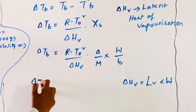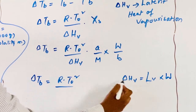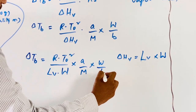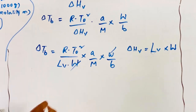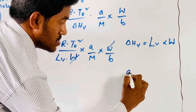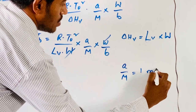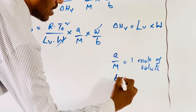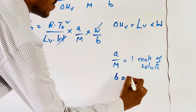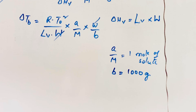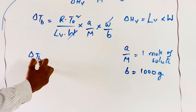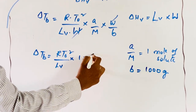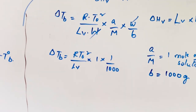Substituting the above values, delta Tb equals R T0 squared divided by (Lv into W) into (A by M) into (W by B). W and W cancel each other. A by M equals 1 mole of solute (unity), and B equals 1 kg (1000 grams). So the equation becomes delta Tb equals R T0 squared by Lv into (1 by 1000).